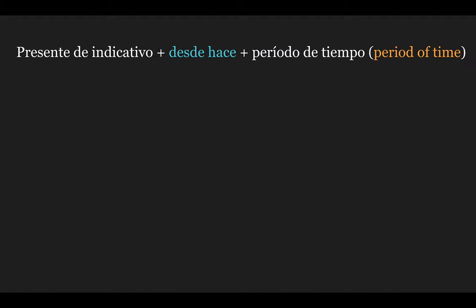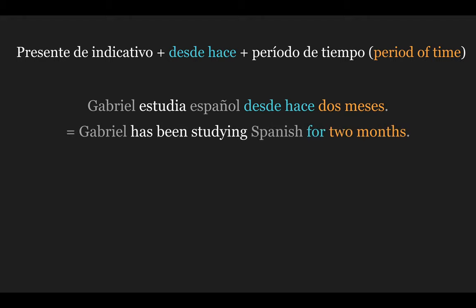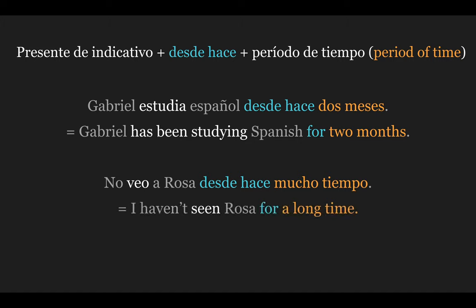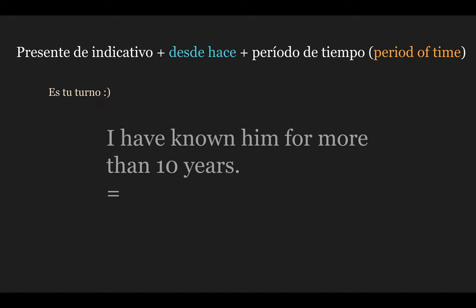Next, let's look at the second formula: presente de indicativo + desde hace + período de tiempo (or period of time). For example: Gabriel estudia español desde hace dos meses — this means 'Gabriel has been studying Spanish for two months.' Another sentence: No veo a Rosa desde hace mucho tiempo — 'I haven't seen Rosa for a long time.' Now it's your turn: translate 'I have known him for more than ten years' into Spanish.